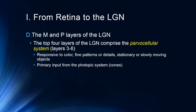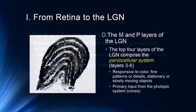This processing starts in the retina, and then continues in the lateral geniculate nucleus, where we get continued division of the visual system. Remember that in the retina we had the scotopic and photopic systems. In the LGN, the top four layers comprise the parvocellular system, which is responsive to color, fine patterns and details, and stationary or slowly moving objects. Its primary input comes from the photopic system — the cones — as all detailed color vision occurs primarily in the fovea.